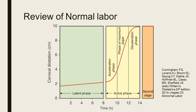The typical normal labor curve is a sigmoid shape. It is divided into the latent phase and the active phase. The active phase is divided into three phases: the acceleration phase, the phase of maximum slope, and the deceleration phase.